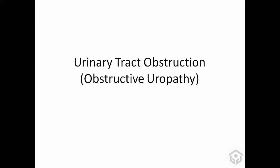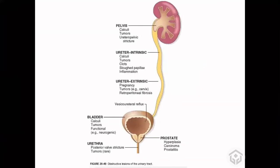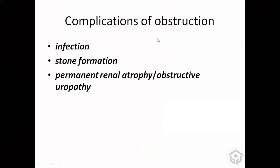The next topic is obstructive uropathy. If there is an obstruction in the ureter, you develop hydro ureter and hydronephrosis. If the obstruction is at the bladder neck, you develop a dilated bladder and bilateral hydronephrosis and hydro ureter. The problems that can develop due to obstruction include infection, stone formation, and obstructive uropathy.